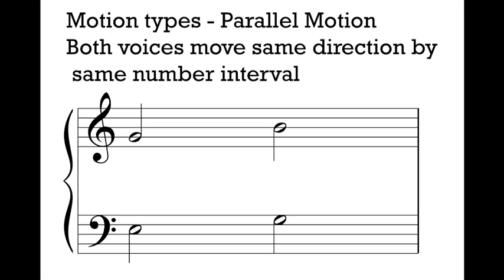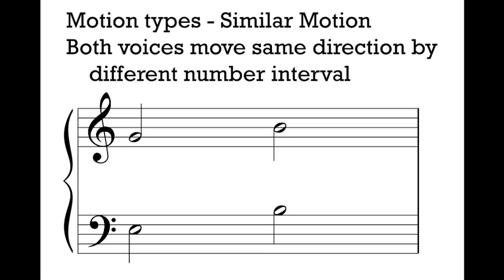Lots of parallel motion makes our voices sound very similar, makes them sort of lock together if they always move the exact same way. There are times when we like to use it, and many times when we actively try not to. We'll talk more about parallel motion in the future. Now for a different motion type where voices move the same direction: both voices are moving up here, but this is not parallel motion because the voices are moving by a different number interval. Our top voice moves up by a third, but our bottom voice moves up by a fifth. When voices move in the same direction by different number intervals, we call this similar motion.